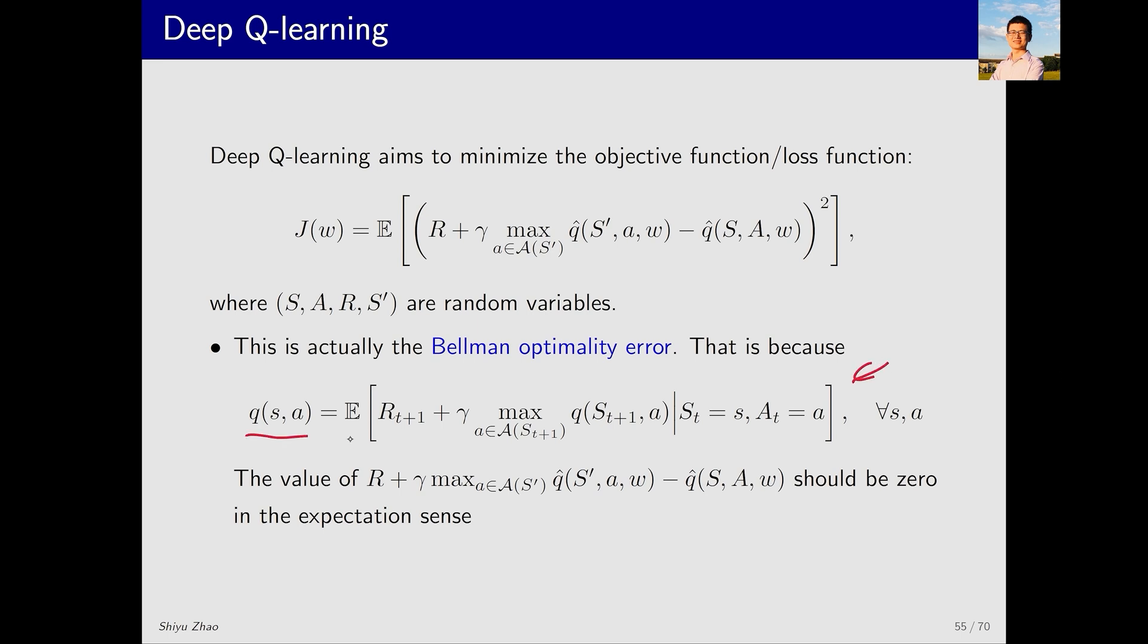Moreover, this TD target corresponds to the Bellman optimality error. Why? Because if you look at this expression, on the left side is Q(S,A) and on the right side is the expectation of R_{t+1} plus this expression. This expression is actually the Bellman optimality equation. We talked about this when we introduced the table-based Q-learning algorithm in a previous lecture. Q-learning is essentially to solve this Bellman optimality equation. So Q(S,A) on the left and the one inside the expectation should be equal in the sense of expectation. Therefore if the policy is optimal the error should be zero. This is why we chose this loss function.